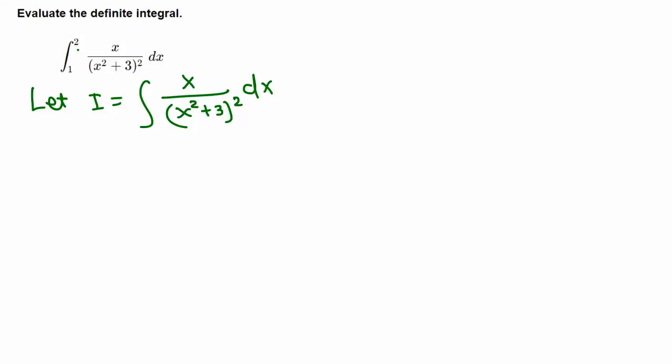We want to find this integral first, and later we'll go back and evaluate at the upper limit 2 minus lower limit 1. This is a fraction, so we need to make a substitution. Generally the inside function or in the bottom - in this case x squared plus 3 - will be our u.